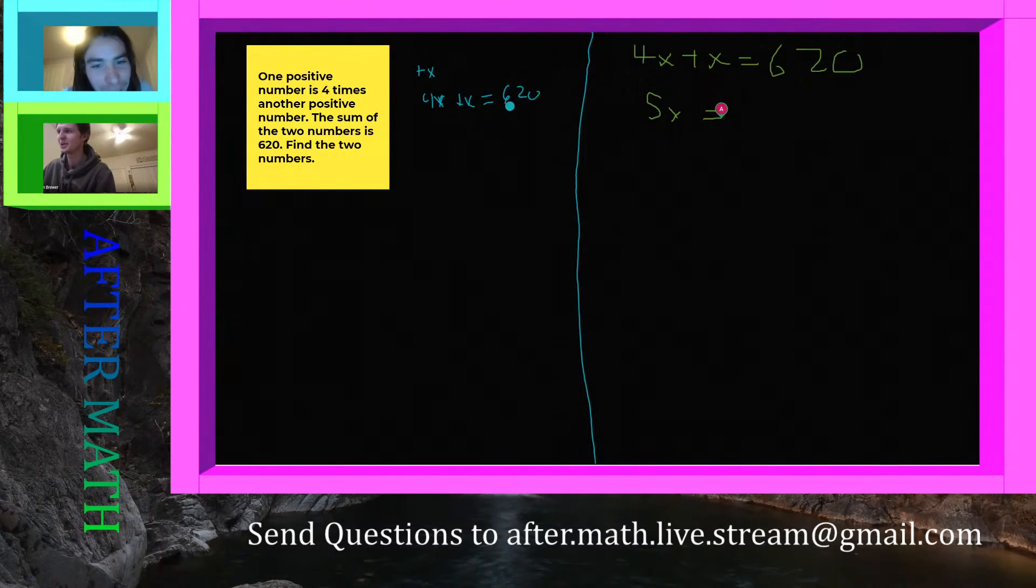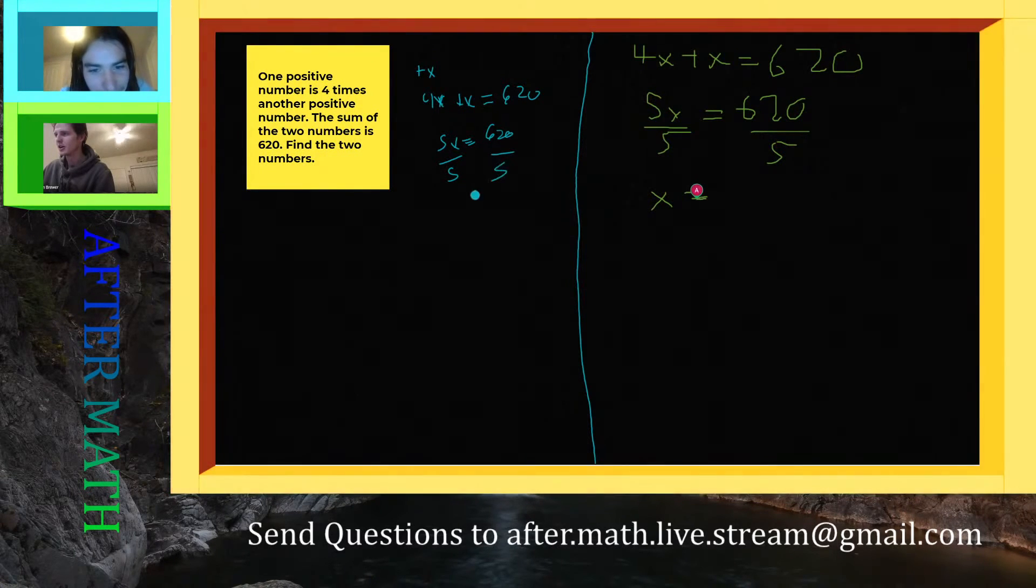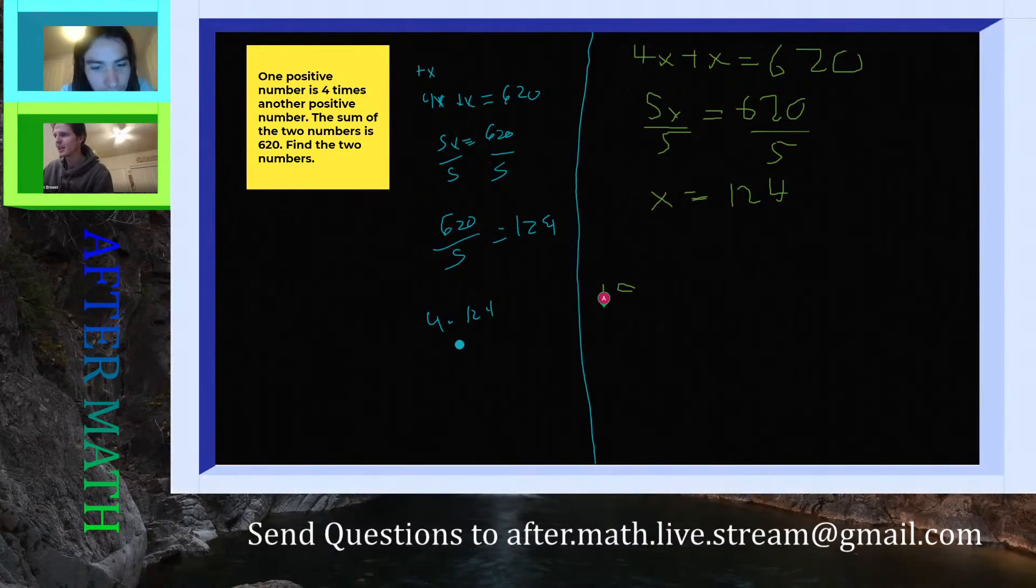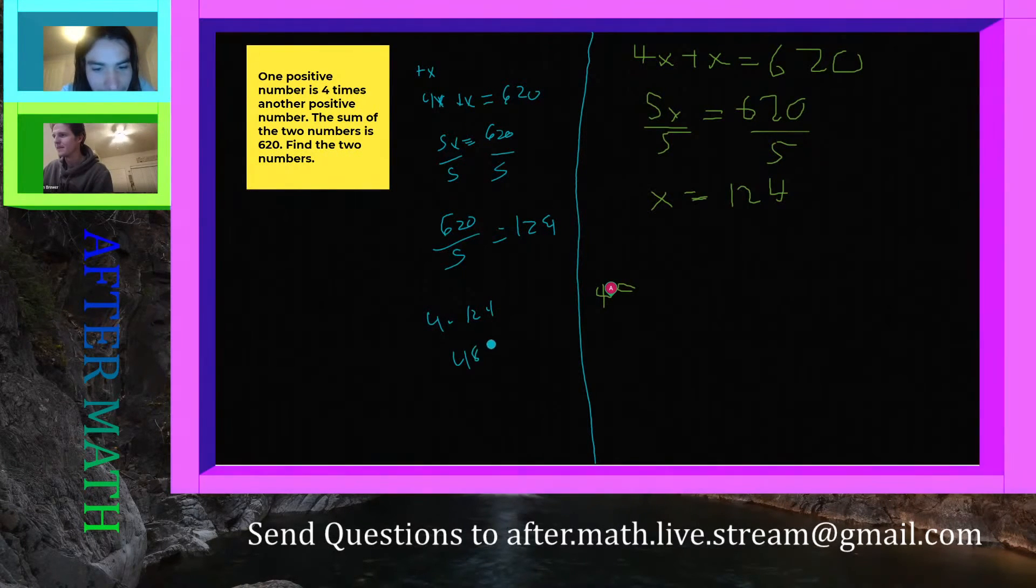I'm going to divide by five, so we got five, and I believe that means x equals 124. And then four times that value would be four times 120... 480, no, 496. I beat you, I beat you. Yeah, you did.